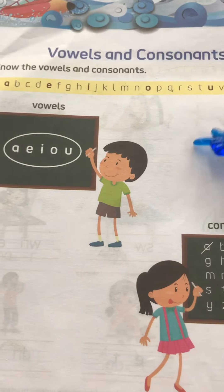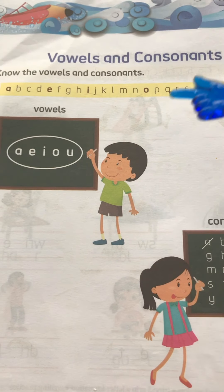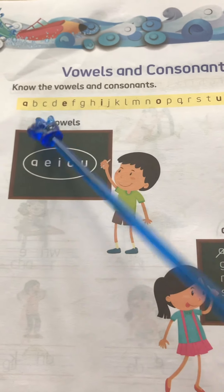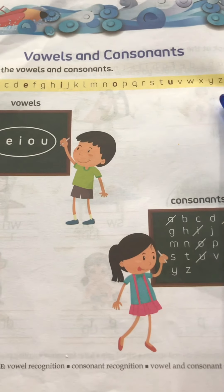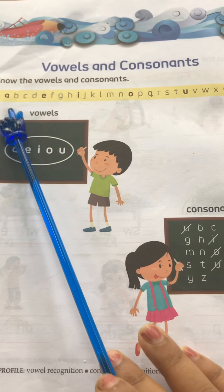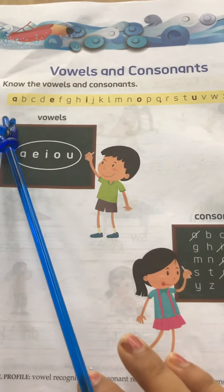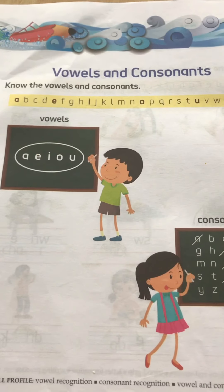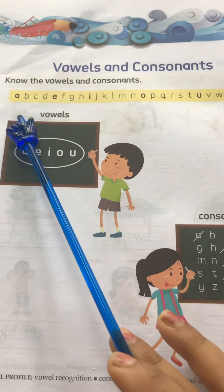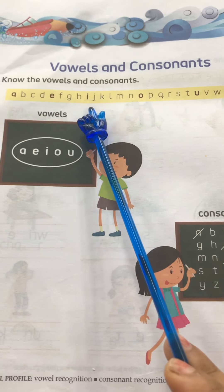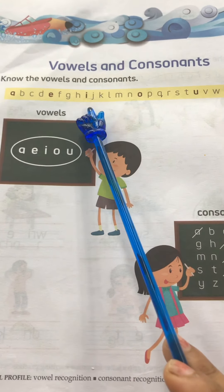We have already done both the topics but today we will revise again. Kids, there are total 26 letters. Out of these 26 letters, five are vowels — A, E, I, O, U. See here: A, E, I, O, U — these are vowels, and they are highlighted here.